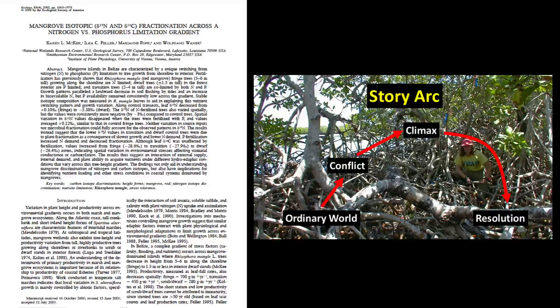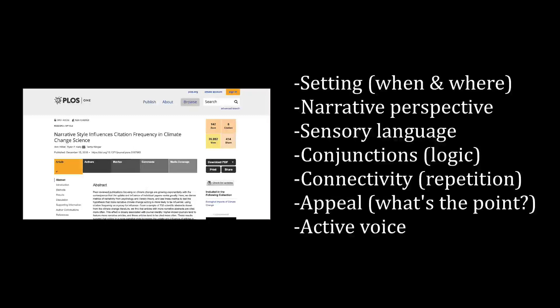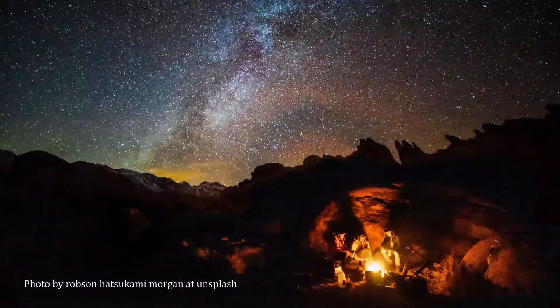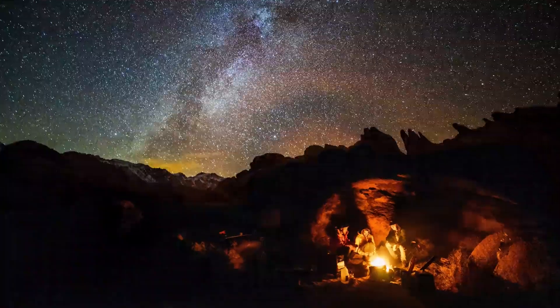There are also more specific techniques that include: writing strong descriptions of when and where the study was done; narrative perspectives such as occasionally using first person; sensory or vivid language; use of conjunctions, which reveal a logical order; connectivity, which is emphasized by repetition or reference to prior statements; and appeal to the reader by explaining the point of your work. I would add to their list use of active versus passive voice, which will make your writing more dynamic. Humans are hardwired for receiving information in the form of stories. As scientific writers, we can take advantage of this human tendency to craft articles that are more enjoyable to read.